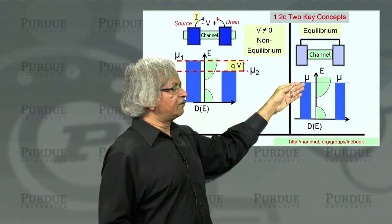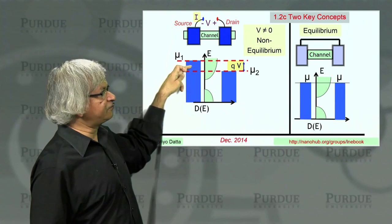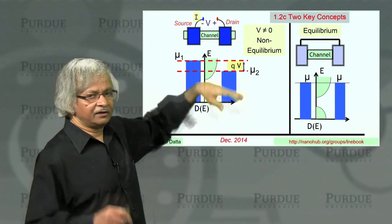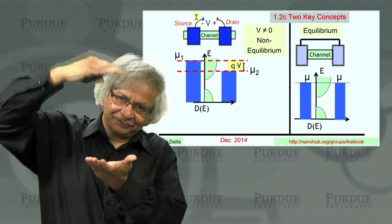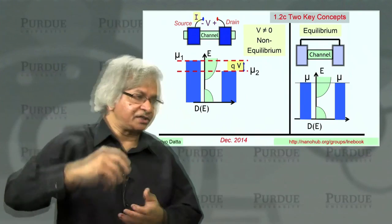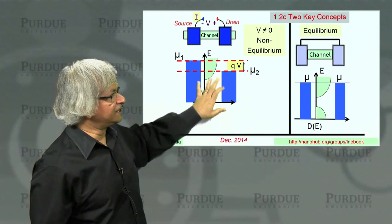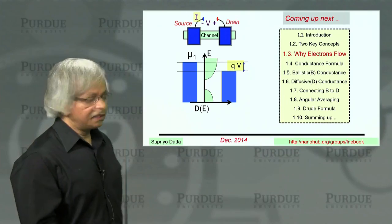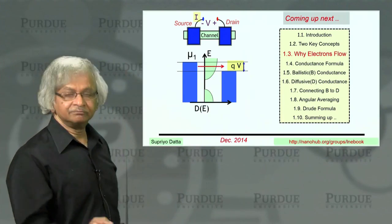Because when you have applied a voltage, the positive side, all the energies, including the electrochemical potential, which tells you how far they are filled, everything sinks. Everything goes down. So that's why on this side, everything is lowered by QV. So this is the picture then that we'll use in our next lecture to discuss a formula for current. So we'll talk about how electrons flow. Thank you.